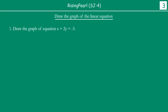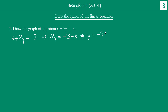So our question is: x + 2y = −3. If we want to solve systematically, we rearrange: starting from x + 2y = −3, we get 2y = −3 − x, and dividing both sides by 2, we get y = (−3 − x) / 2. So we have written y in terms of x.